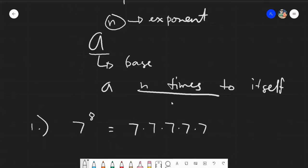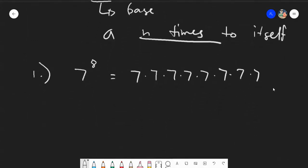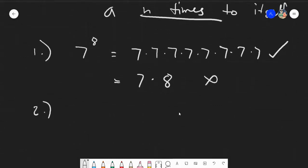7, 7, 7, 1, 2, 3, 4, 5, 6, 7, 8. And it's a common misconception among students that when we talk about 7 raised to 8, it's equal to 7 times 8. This is very wrong. You're not multiplying 7 by 8, but you're multiplying 7 eight times to itself.